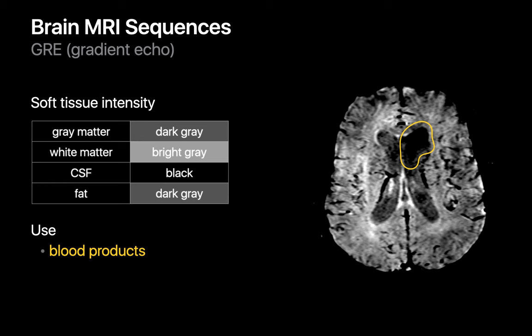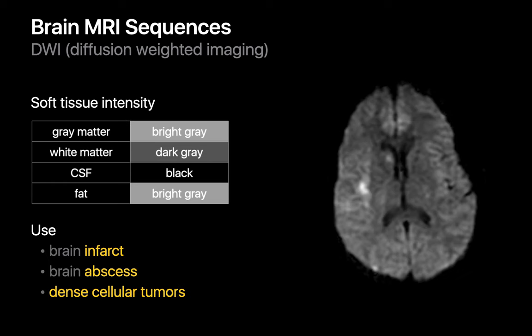Our fifth standard brain MR sequence is diffusion-weighted imaging. The grayscale relationships of gray matter, white matter, and CSF on diffusion-weighted images are similar to their relationships on FLAIR imaging. However, on diffusion-weighted images, any areas where the random Brownian motion of water molecules is abnormally restricted, such as in an acute infarct, a brain abscess, or a really dense tumor, will appear white, such as in the two small acute infarcts in this patient.